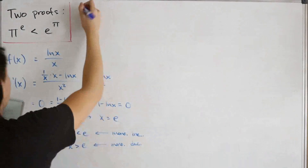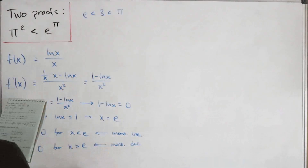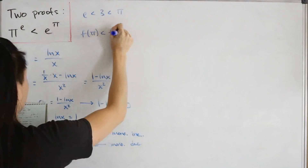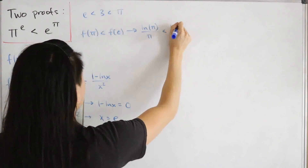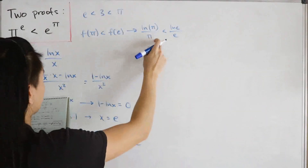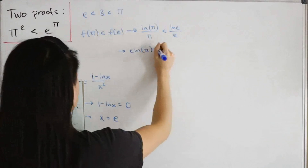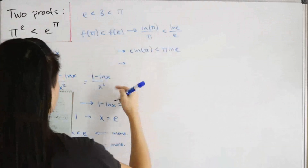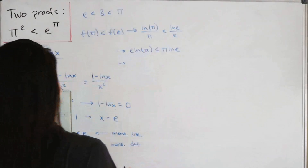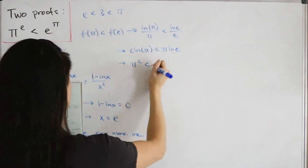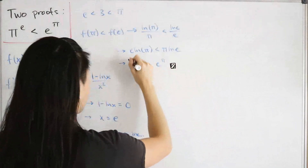Since e < 3 < π and f is decreasing for x > e, we have f(π) < f(e). Substituting back: ln(π)/π < ln(e)/e. Multiplying both sides by π and then by e gives e·ln(π) < π·ln(e). Using the logarithm power rule and exponentiating, this implies π^e < e^π. That concludes the first, standardized proof.